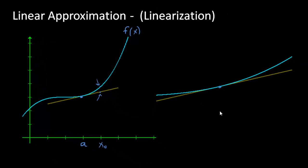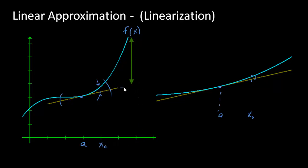Now in fact if you were to zoom in on this point, you're going to have your a value which was here, and then your x value right here. You can see that they're actually very close to each other. So the tangent line is a good estimation of the y values on the function, as long as you are within a certain distance from a. Notice that as you move away from a, the y value on the function will be very different than the y value on the tangent line.